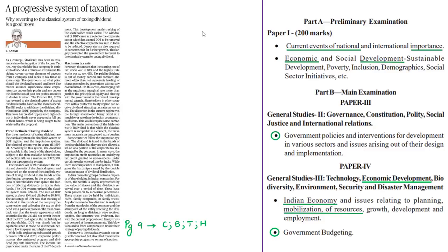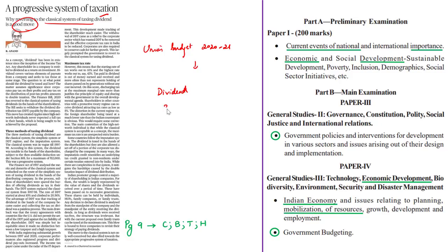Let us start our analysis. We will look at an editorial titled 'A Progressive System of Taxation.' In Union Budget 2020-21, the Finance Minister announced that India will revert back to the classical system of taxing dividend. The author of this editorial has welcomed this move of the government. In this context, let us see what dividend means, and then we shall see the three types of taxing dividend.